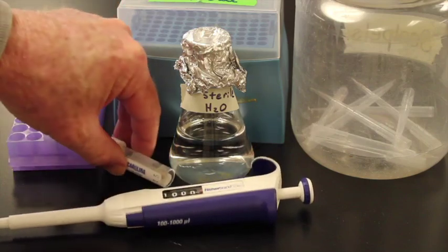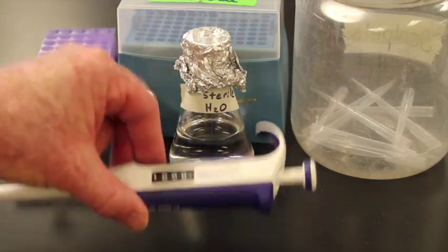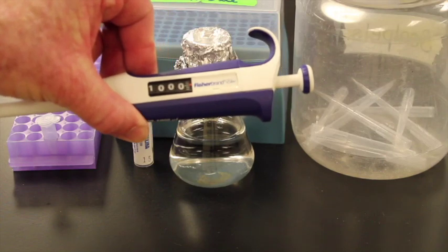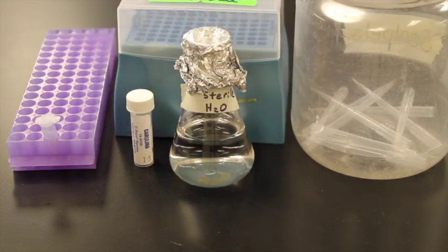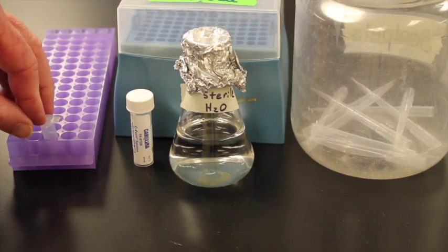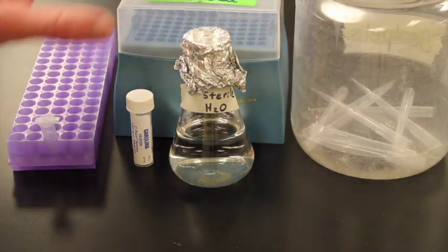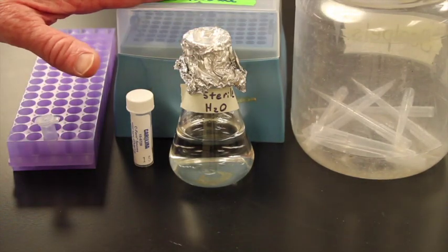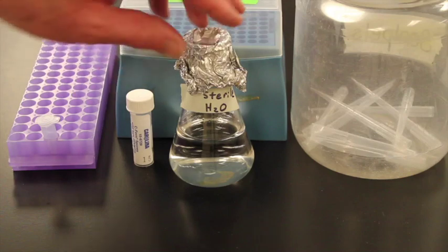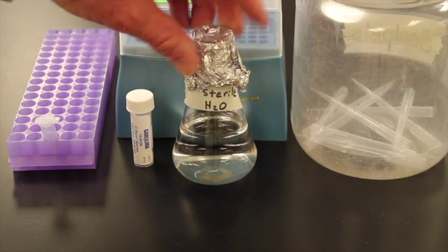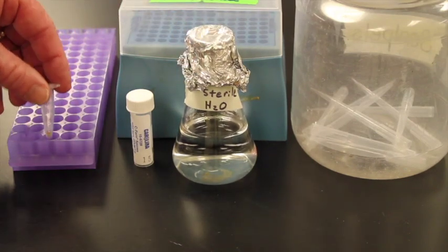So the first thing I'm going to do is take a pipetter. This is a thousand microliters or one ml. I'm going to pipette one ml into this microcentrifuge tube. Everything now has been autoclaved. I've autoclaved the tips, I've autoclaved the water to make it sterile, and I've autoclaved this microcentrifuge tube.